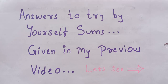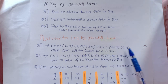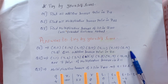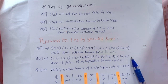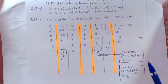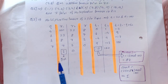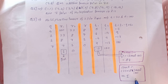Firstly we will see answers to the 'try by yourself' sums from my previous video. Answer to question number 1: we have 6 additive inverse pairs. Answer to question number 2: we have 7 multiplicative inverse pairs. Answer to question number 3: GCD is 1, so multiplicative inverse exists, and the inverse calculated is 87, and we also checked that it is correct.